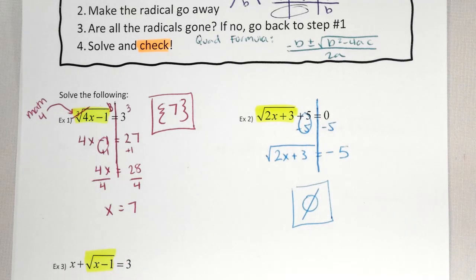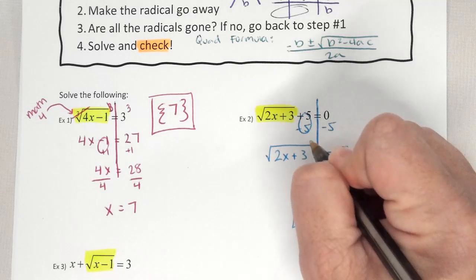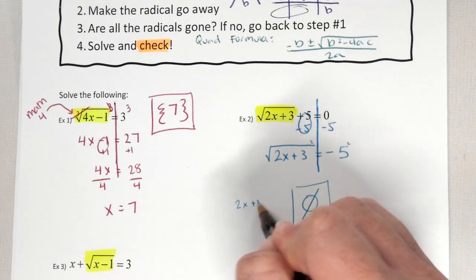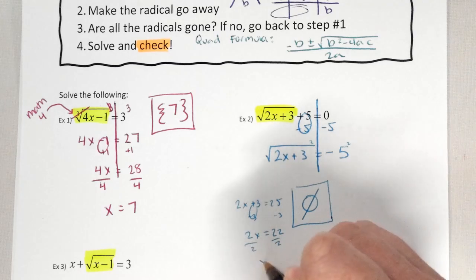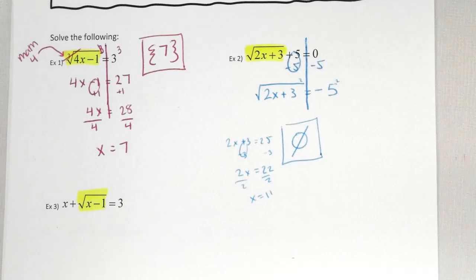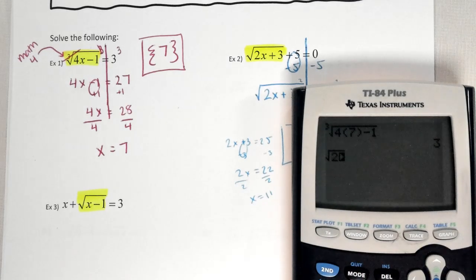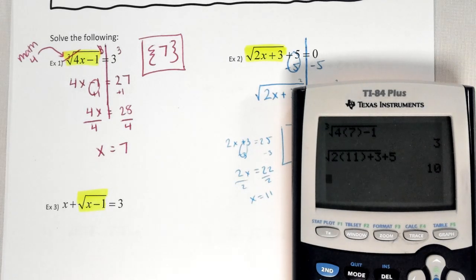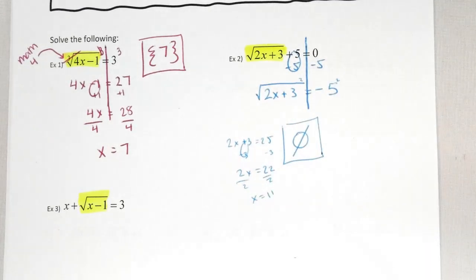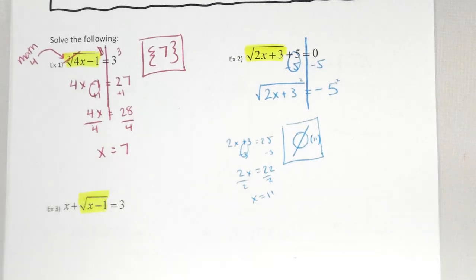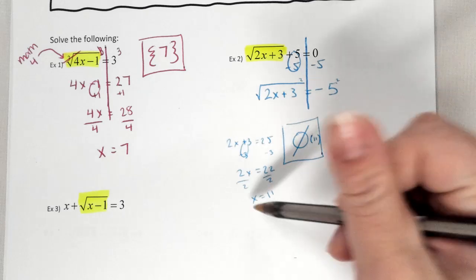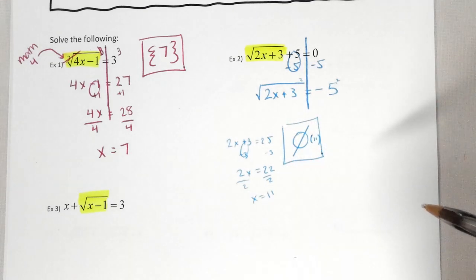Can a cube root give you a negative? Yes. If you were to solve this, we would have squared both sides and gotten 2x plus 3 equals 25, minus 3, minus 3, so 2x equals 22, divided by 2, x equals 11. If I plug in square root of 2 times 11 plus 3 plus 5, this should equal 0 — did it work? No. That's why there's no solution. The one solution we got didn't work, so it's extraneous — written as 11 in parentheses.